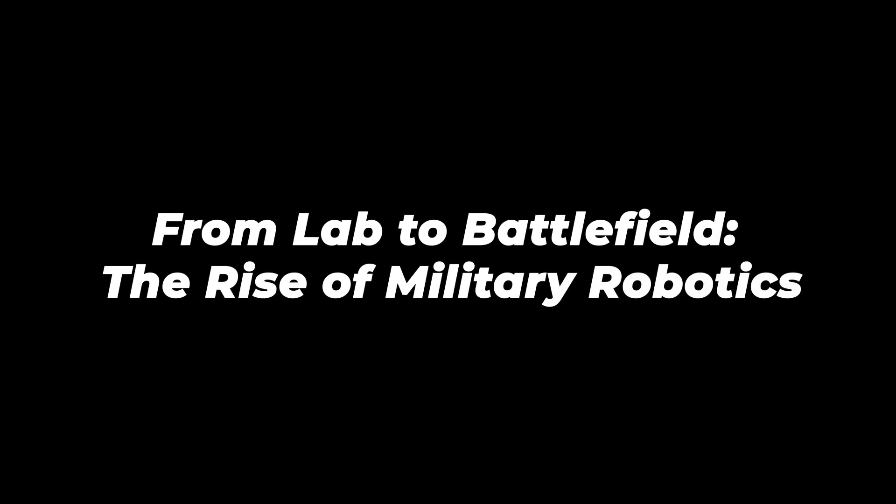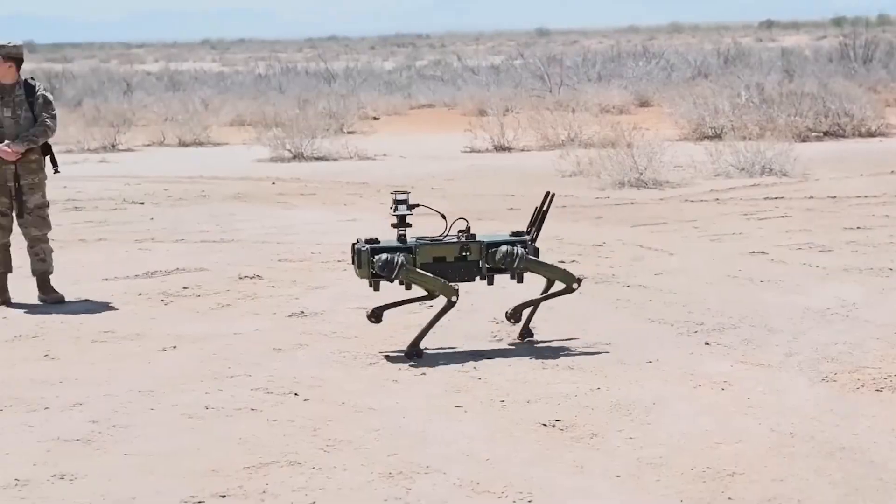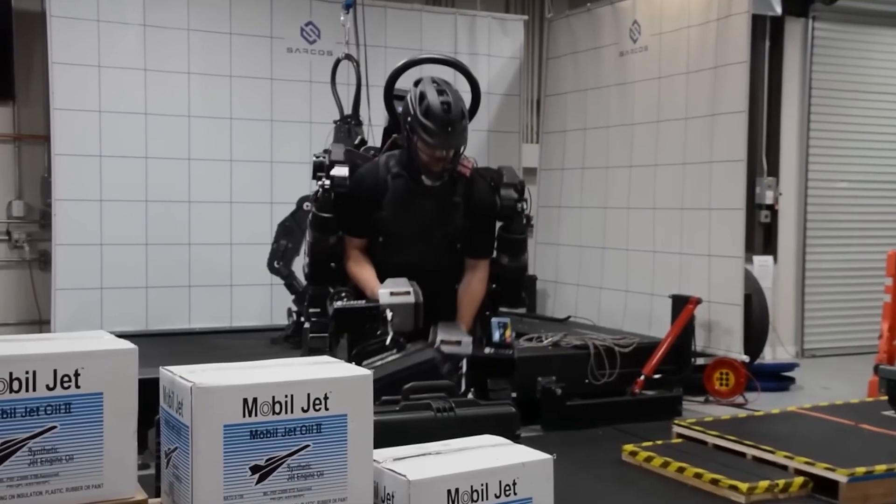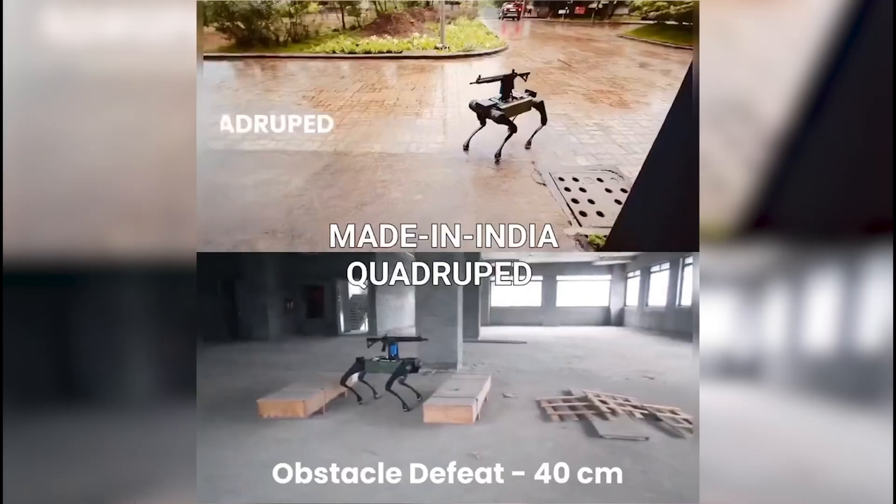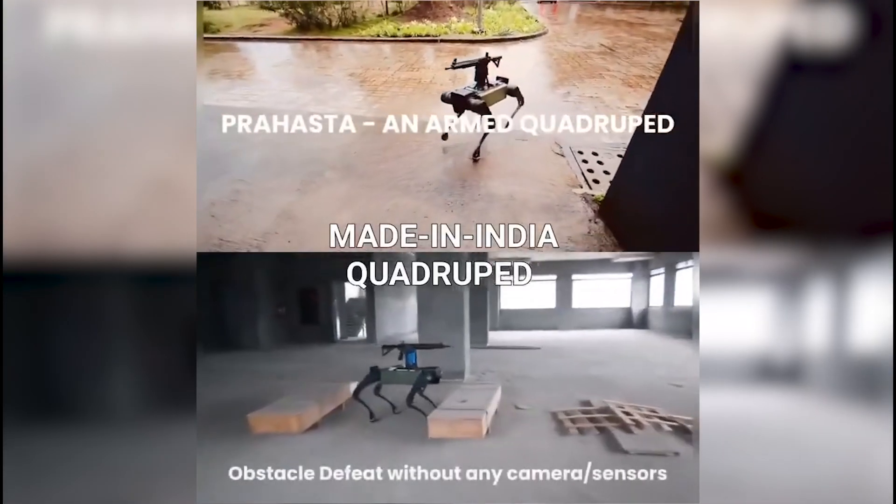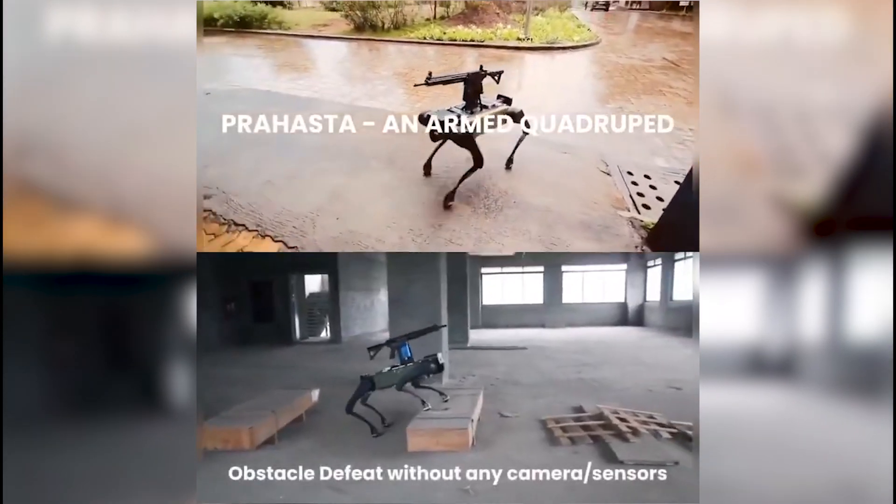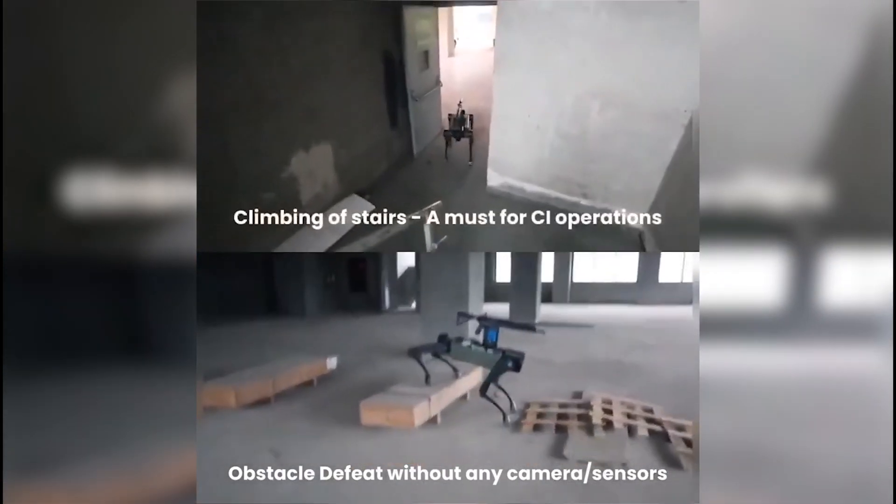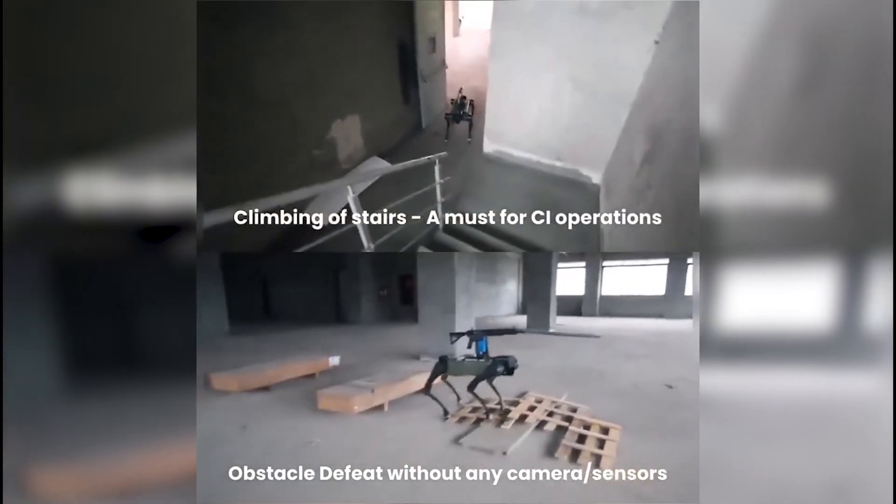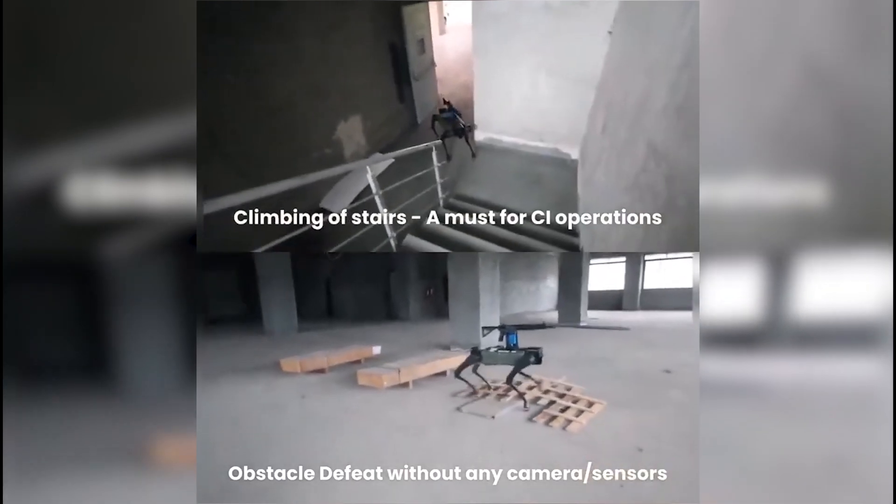From lab to battlefield, the rise of military robotics. As researchers push the boundaries of AI in robotics and labs, others are already applying advanced robotics to military applications. Indian company Zen Technologies has unveiled Prahasta, a four-legged robot designed for defense operations. This isn't just another parkour bot. Prahasta can carry assault rifles and perform complex military tasks.